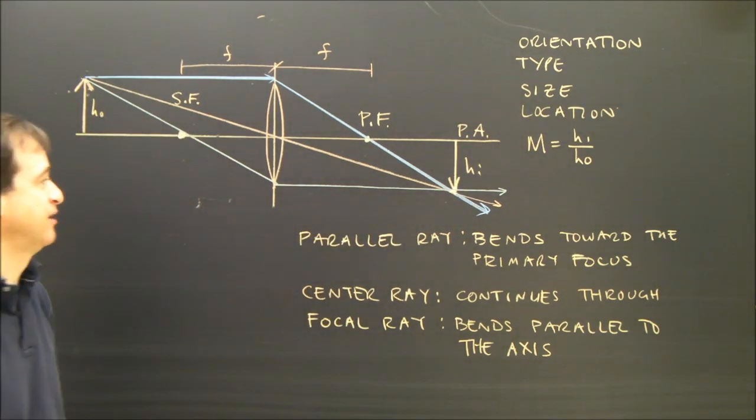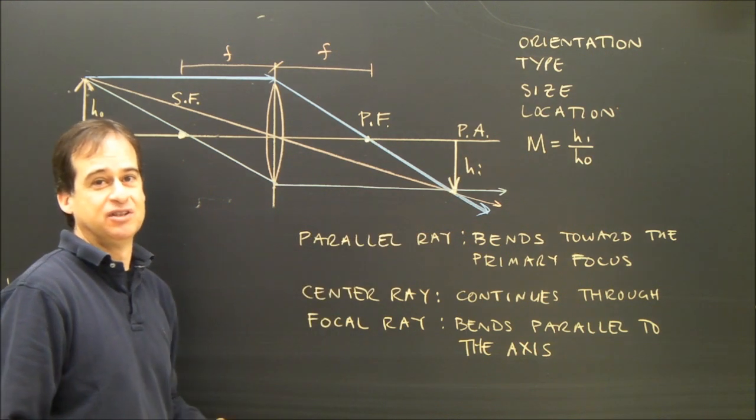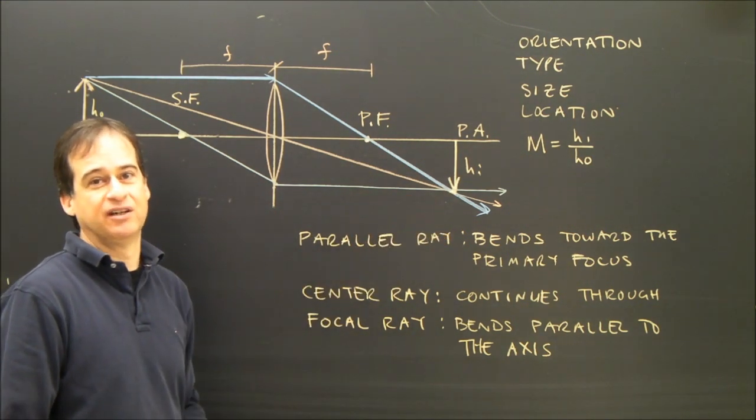Since all three rays met, then this is a real image. It's also on the opposite side of the lens, which makes it a real image.